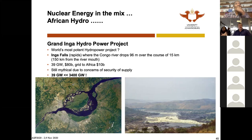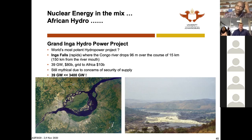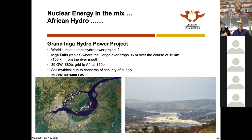Thirty-nine gigawatts would be the largest ever hydropower project on planet earth — impressive, but still less than 3,400 gigawatts. It's 10 times too little. Giant as this river is, it's not going to do the job. We must be realistic and think in scale. When you want 20 times more energy, saving a few percent looks silly. You have to build an enormous amount of power if you believe in wealthy Africa.